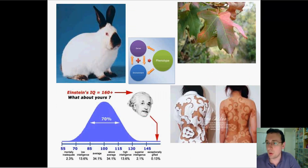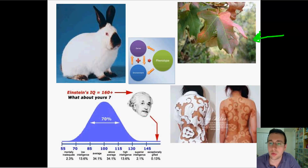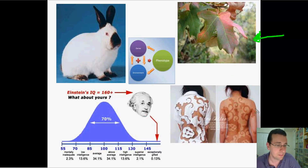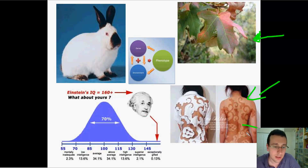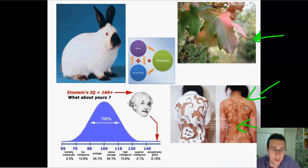For example, plants respond to changes in sunlight — as we talked about in the photosynthesis chapter — to change the expression of certain genes, which causes changes in proteins and therefore changes in pigmentation. Also, you can get tanned and control where you get tanned, creating a pattern on your back, showing how exposure changes can actually change the phenotype.